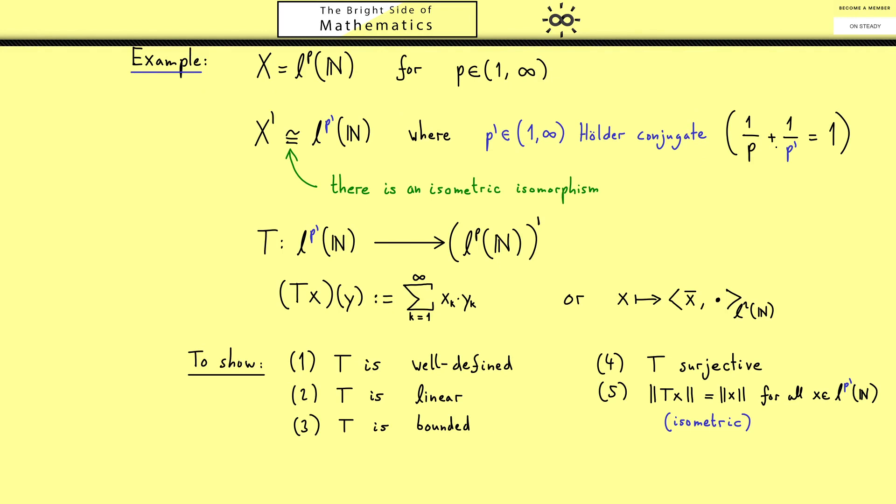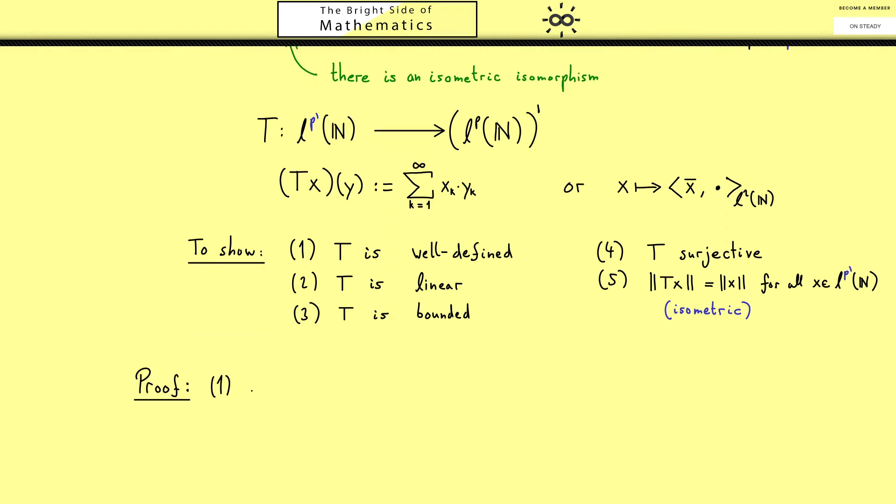Then let's start the proof with part 1. As I told you before the well-definedness follows from Holder's inequality. You see this if we rewrite the map in this sense where we apply the triangle inequality for the absolute value and also use the continuity for the absolute value.